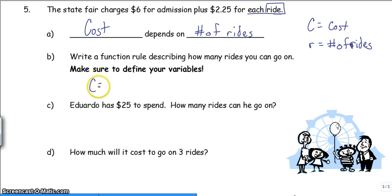So the cost will be $6 for admission. They tell me what to do with it, plus each, here's our other keyword, so $2.25 times the number of rides. I now have my function rule.